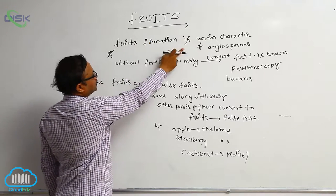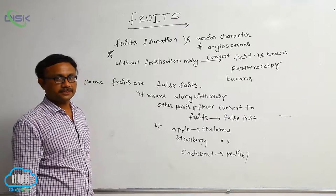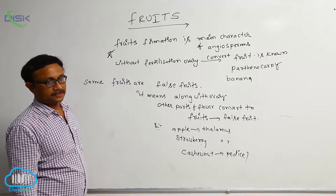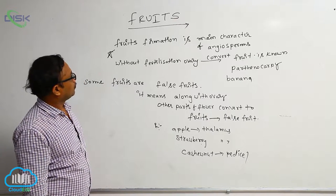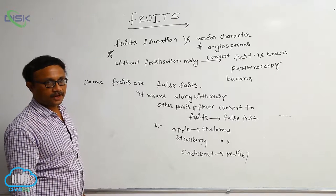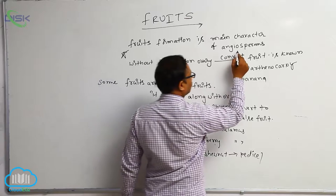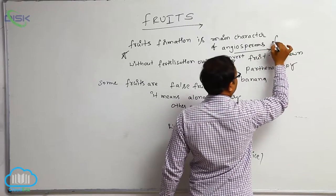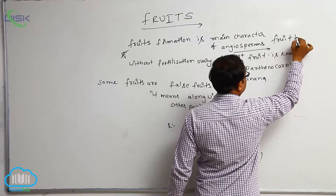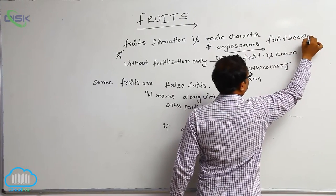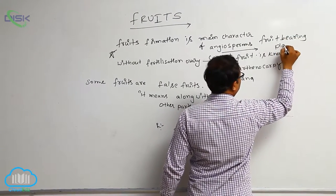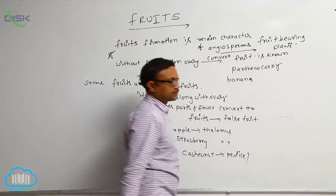Fruits. Fruit formation is the main characteristic of angiosperms. Fruit-bearing plants are known as angiosperms. So producing of the fruits or formation of fruit bearing plants - fruit bearing plants are known as angiosperms.